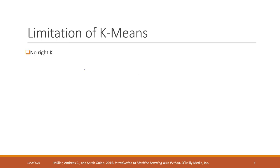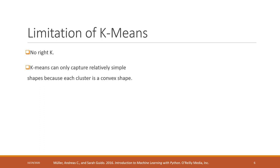Now let's talk about the limitations of K-means. The first limitation is that this is unsupervised — we don't have ground truth labels. There is no right K, and choosing different K values gives different results. The outcome is very subjective. Also, K-means can only capture relatively simple shapes.